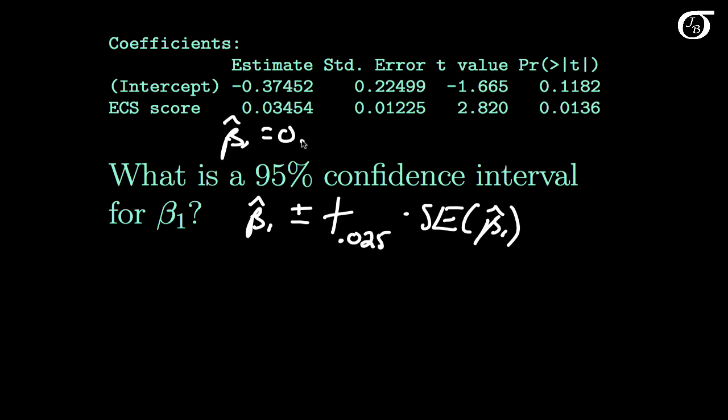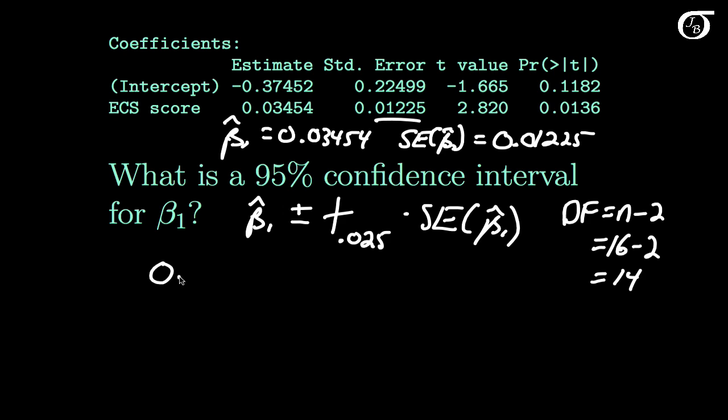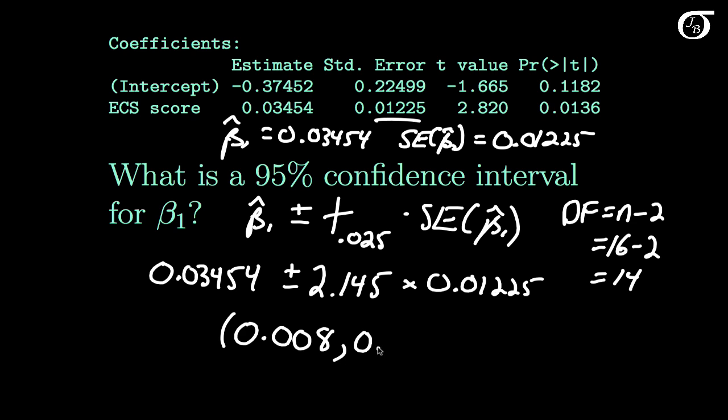Beta 1 hat is found right here as 0.03454, and its standard error, the standard error of beta 1 hat, is found right next door at 0.01225. So now we need to find the appropriate t value, and to do so we need the degrees of freedom. The degrees of freedom in simple linear regression are n minus 2, and we had 16 observations in this data set, so there's 16 minus 2, or 14 degrees of freedom. So the value of beta 1 hat is given in the output as 0.03454, and then we're adding and subtracting the appropriate t value. If we go to our table with 14 degrees of freedom, or if we use statistical software, we'd see that this value is 2.145, and we multiply that by the standard error, 0.01225. If we carry out those calculations, we would see that the 95% confidence interval for beta 1 to three decimal places is 0.008 and 0.061.